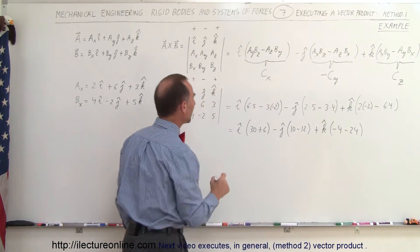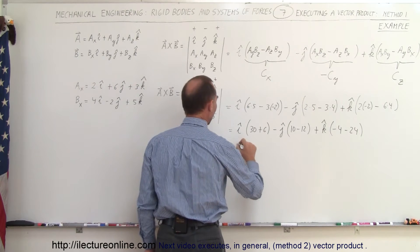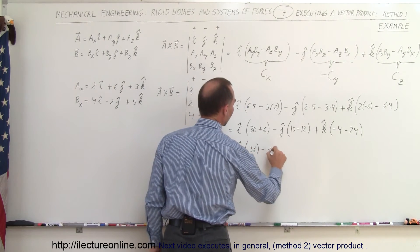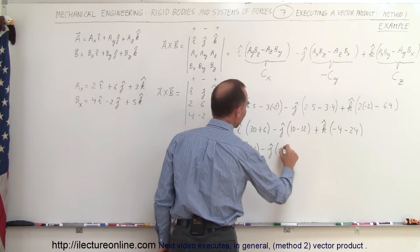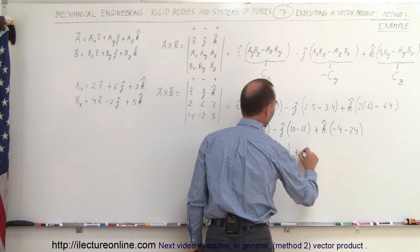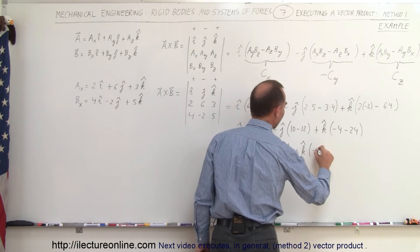Okay, continuing on. So this is equal to I times 36, minus J times a negative 2, and plus K times a negative 28.